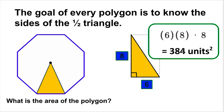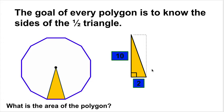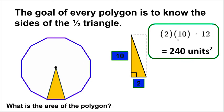Pause the video on this next one. I've got a polygon with 12 sides. The half side length is 2 and the height is 10. What is the total area? Hopefully you took 2 times 10 to get 20, then multiplied by 12 sides to get 240 units squared. The half-base times height gives the wedge piece area, times the number of sides gives the total polygon area.